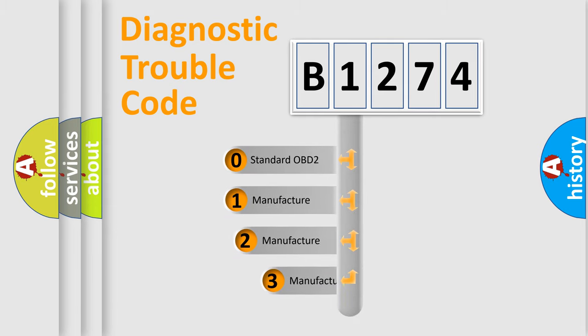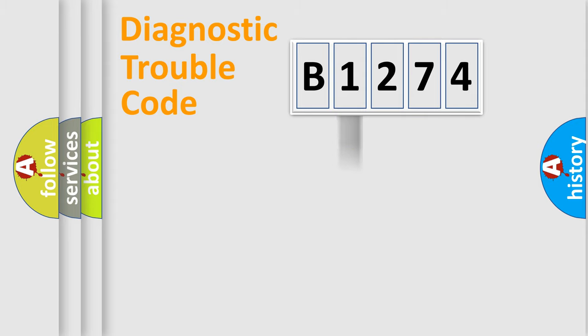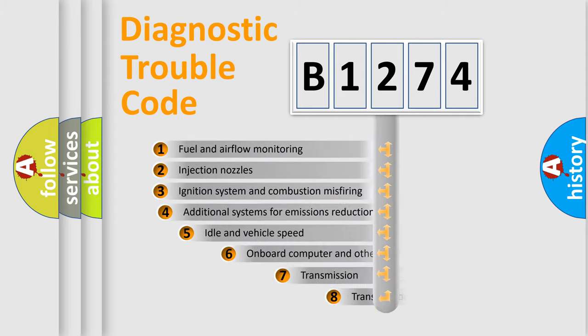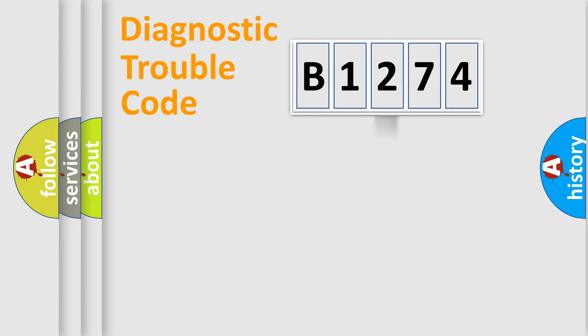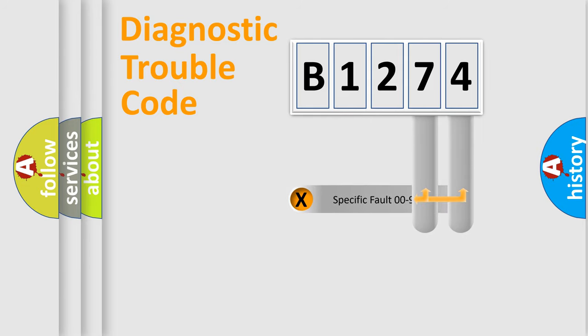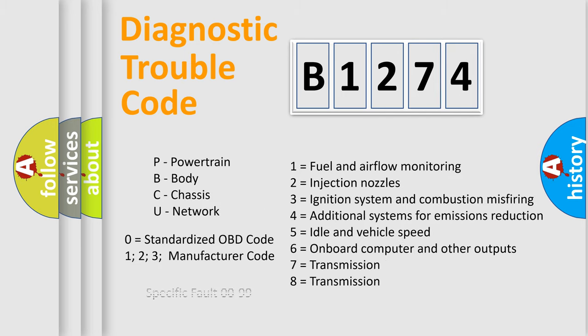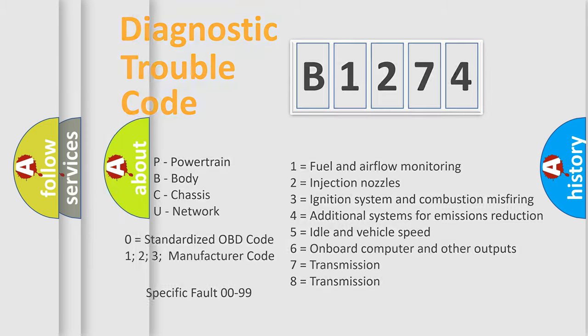This distribution is defined in the first character of the code. If the second character is expressed as zero, it is a standardized error. In the case of numbers 1, 2, or 3, it is a manufacturer-specific error expression. The third character specifies a subset of errors. This distribution is valid only for the standardized DTC code, and only if the second character is expressed by the number zero.